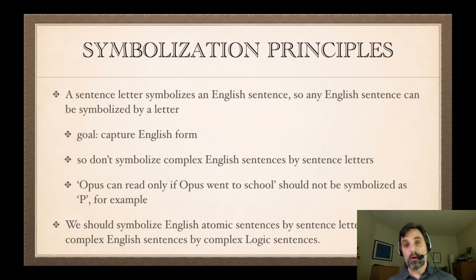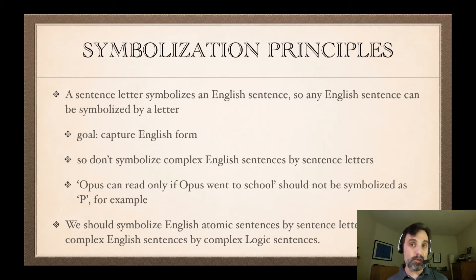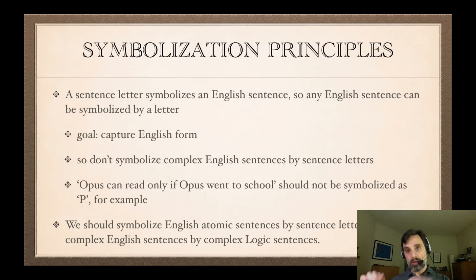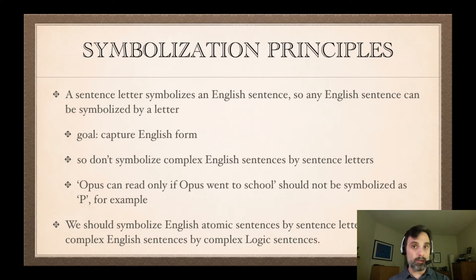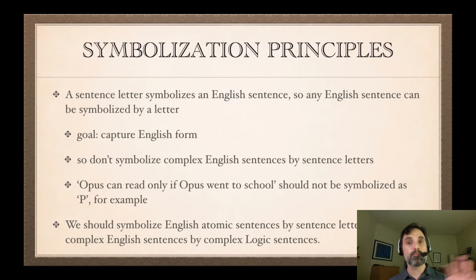A non-atomic sentence — a complex sentence — should be symbolized by a complex logical sentence. So: atomic English maps to atomic logic, and complex English maps to complex logic when you're symbolizing.